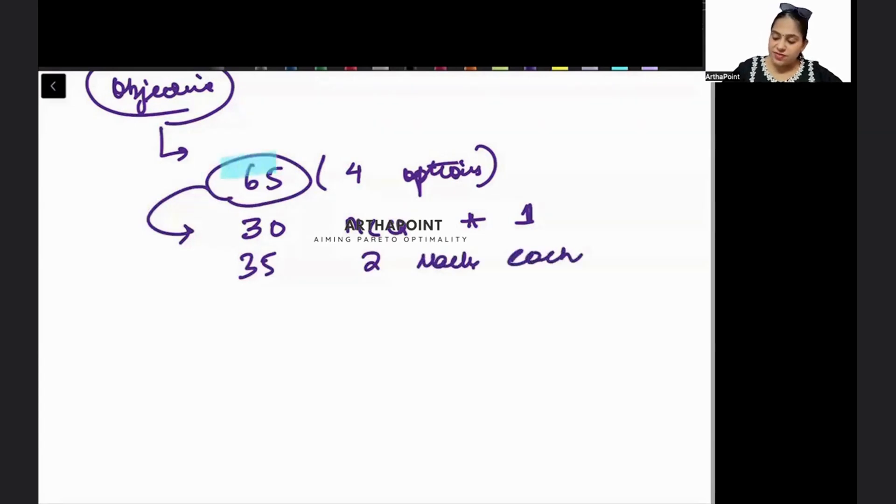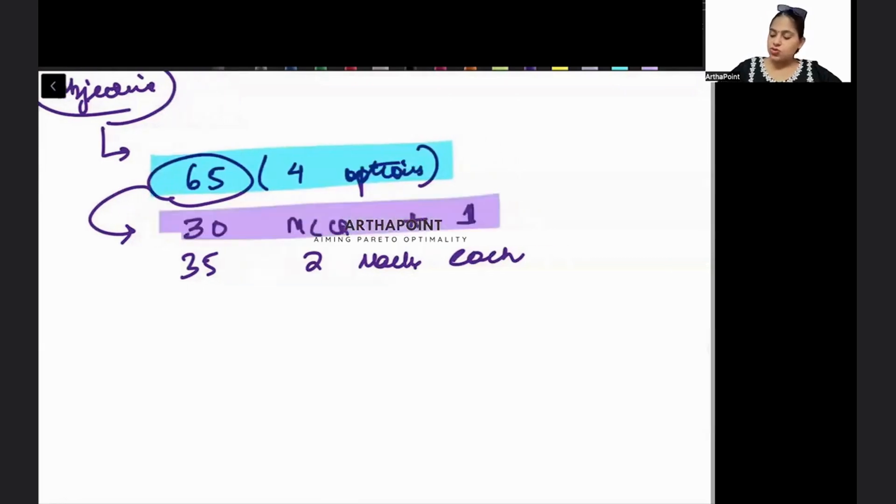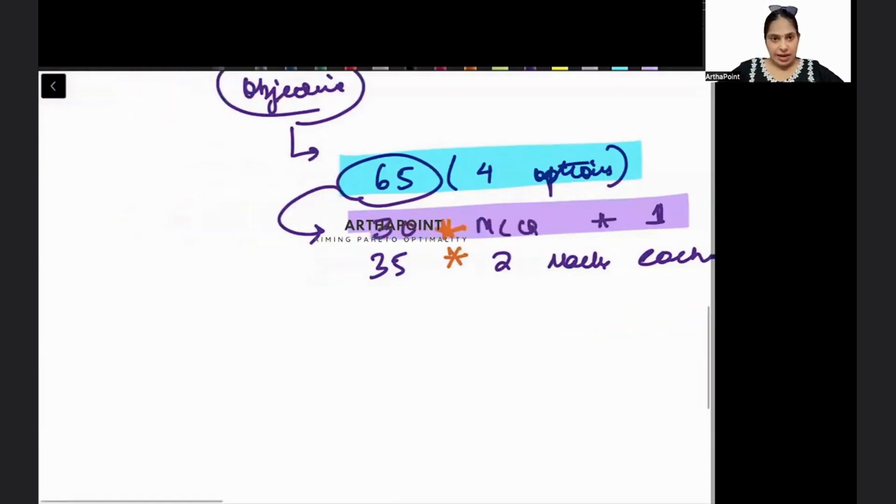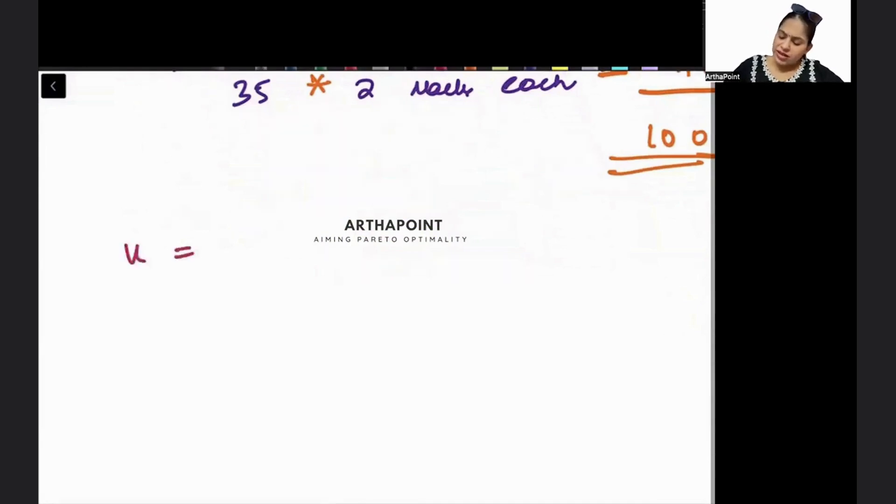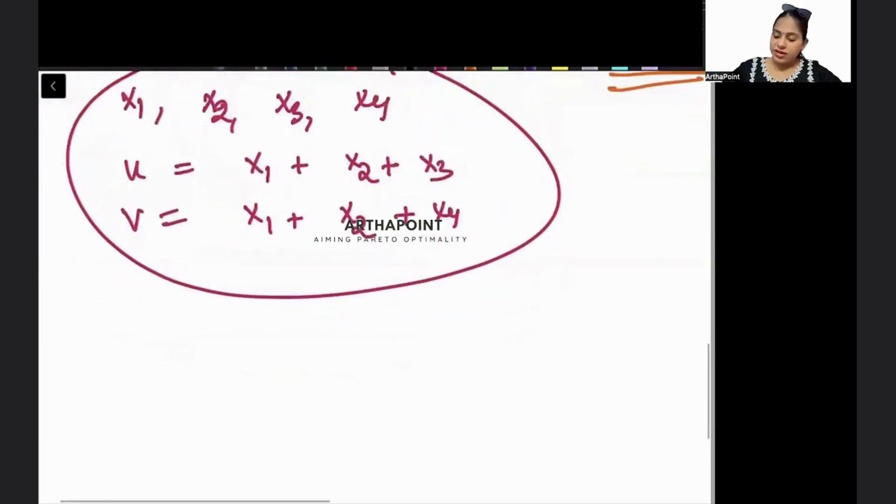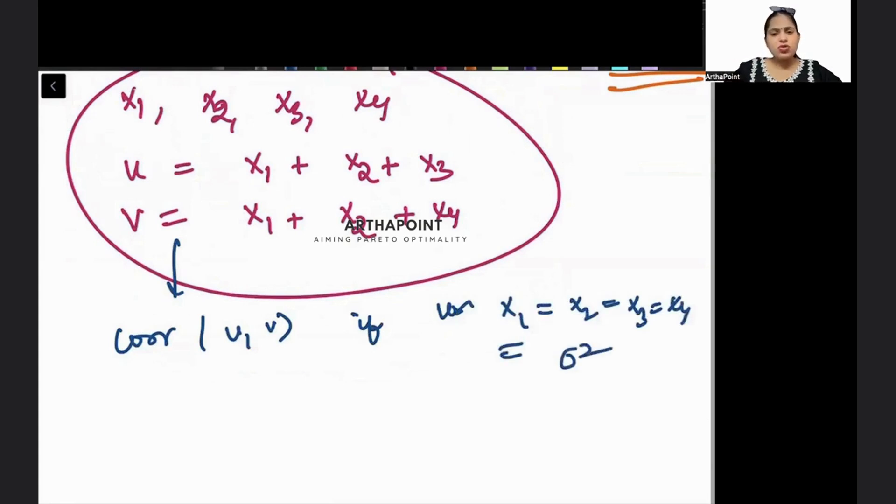These 65 MCQ questions - 30 questions will be of one mark each, so 30 marks, and 35 questions will be of two marks each, so 70 marks. Total there will be 100 marks. Let me give you a sample of how questions are asked. Suppose I tell you that consider a variable U which is X1 plus X2 plus X3, and consider a variable V which is going to be X1 plus X2 plus X4. Imagine that X1, X2, X3, X4 are not related with each other. Then go ahead and find out the correlation between U and V if the variance of X1, X2, X3, and X4 are all sigma square.